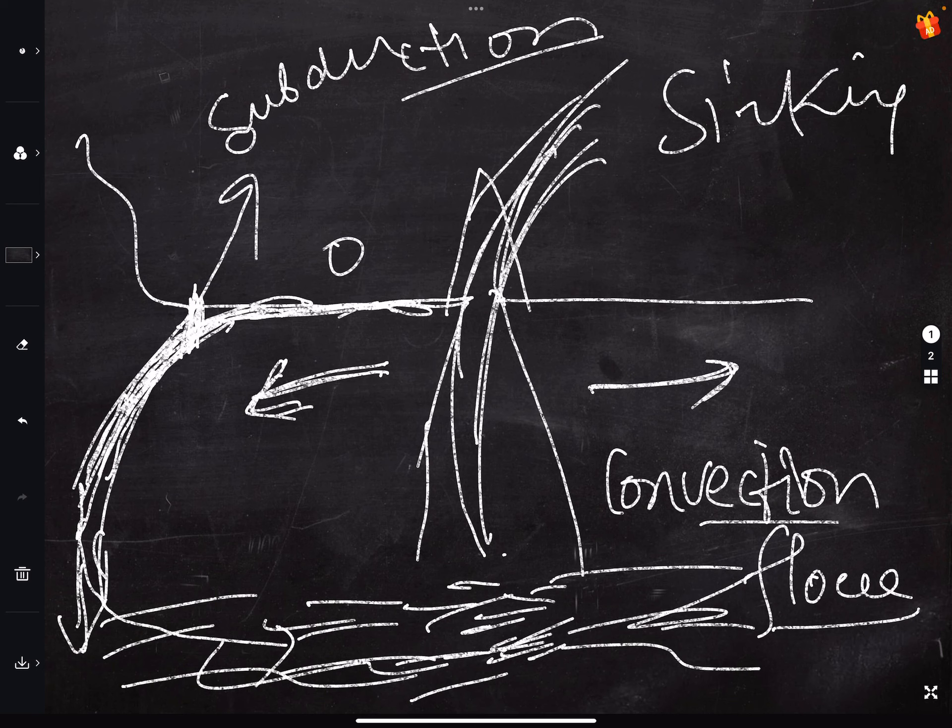These two are different. Here will converge. So this is subduction. This is continent. This is ocean. Here is subduction, sinking. So in this way, the reason for the plate movement is this convection flow.